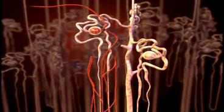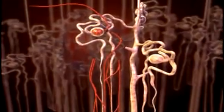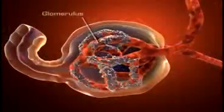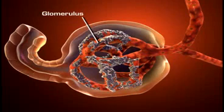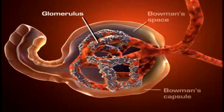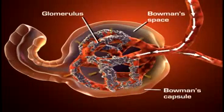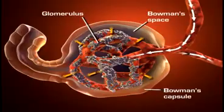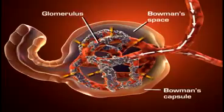Each nephron consists of a glomerulus and a system of tubules. The glomerulus is a unique, high-pressure mass of capillaries that filters the blood. The glomerulus is encased in a thin, double-walled capsule called Bowman's capsule. The space inside the capsule and surrounding the glomerulus is called Bowman's space.